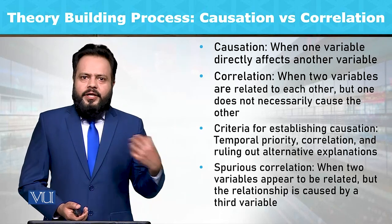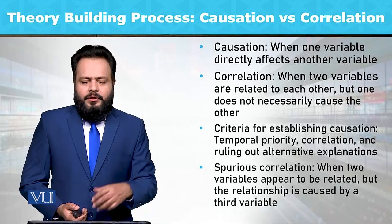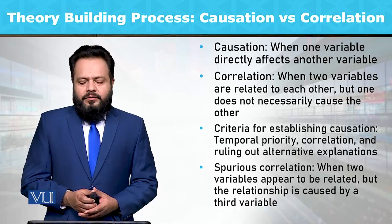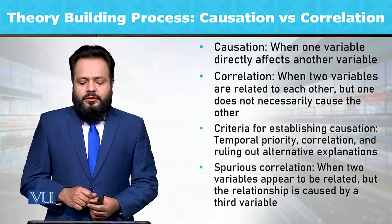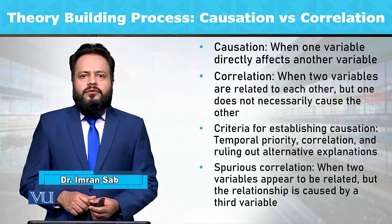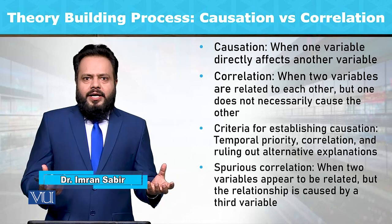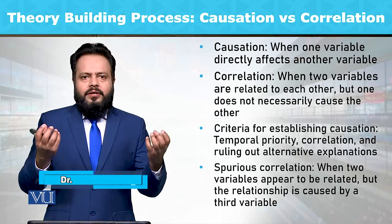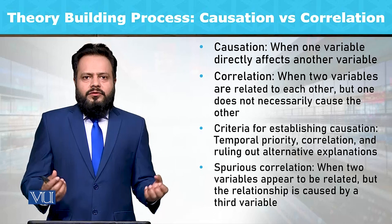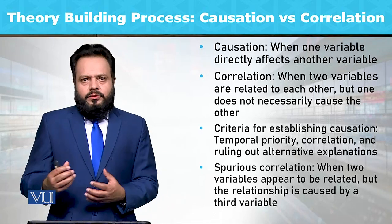If A does not exist, then B doesn't exist. Correlation is when two variables are related to each other, but one does not necessarily cause the other variable. It does not mean that if two variables are simultaneously coexisting, they must have a causal relationship between each other.